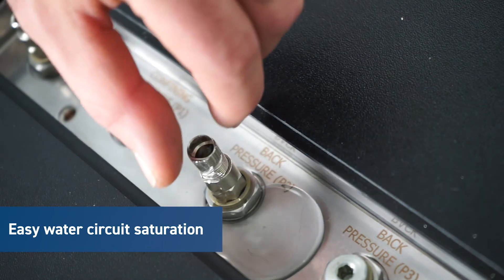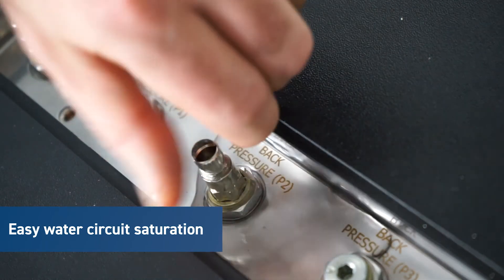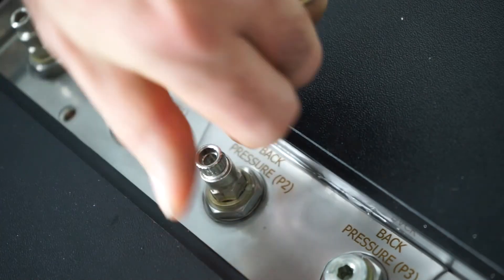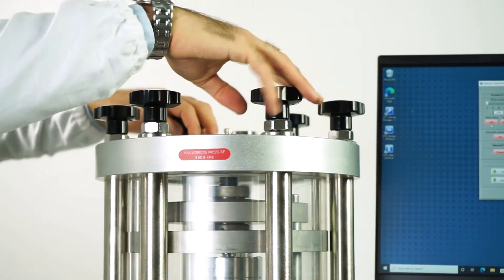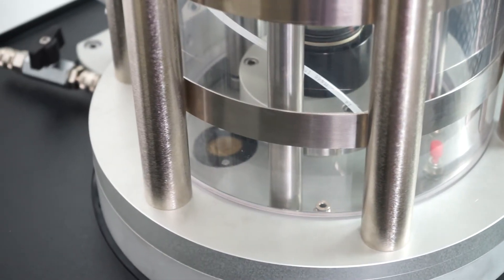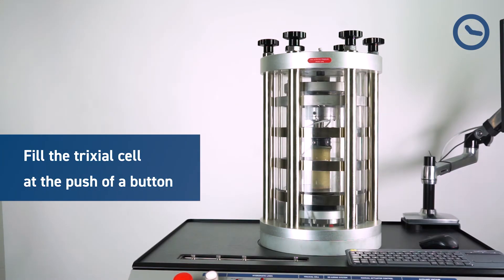During water circuit saturation, all the pressure transducers can be easily de-aired thanks to the de-airing panel selector on the control panel. No more thinking of which valves to operate with a risk of damage to samples.